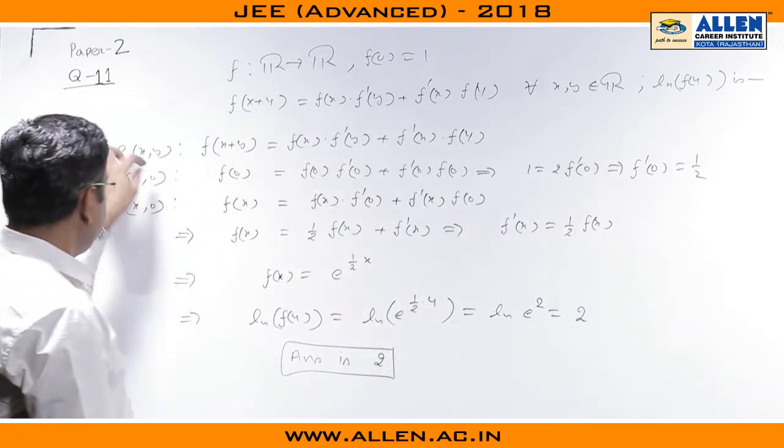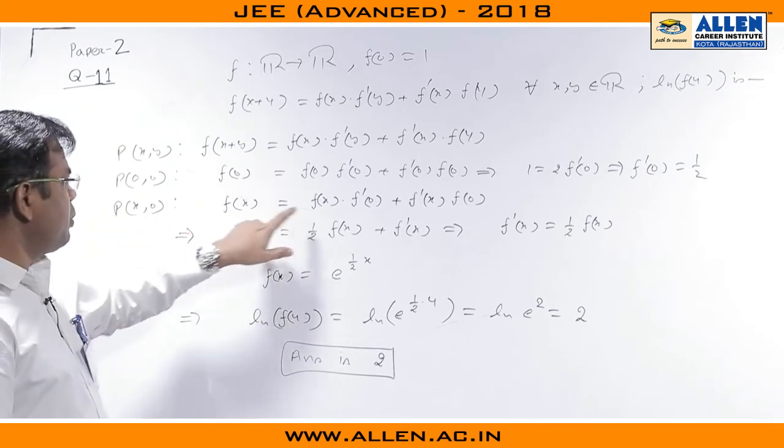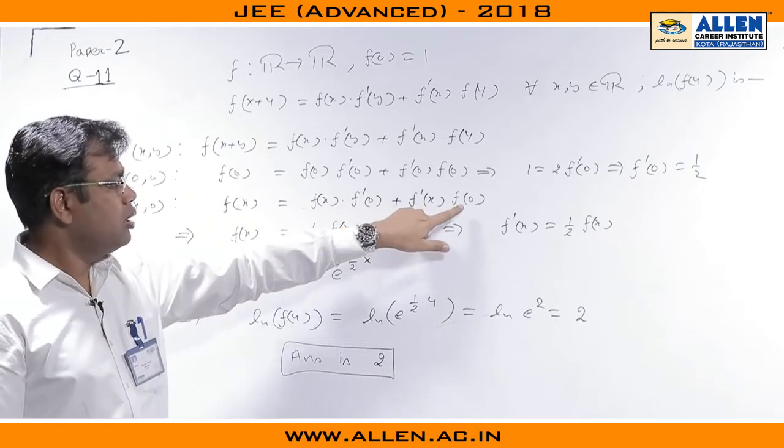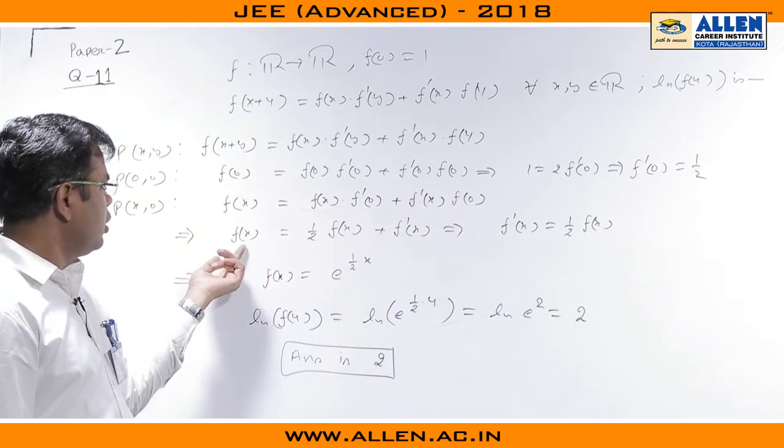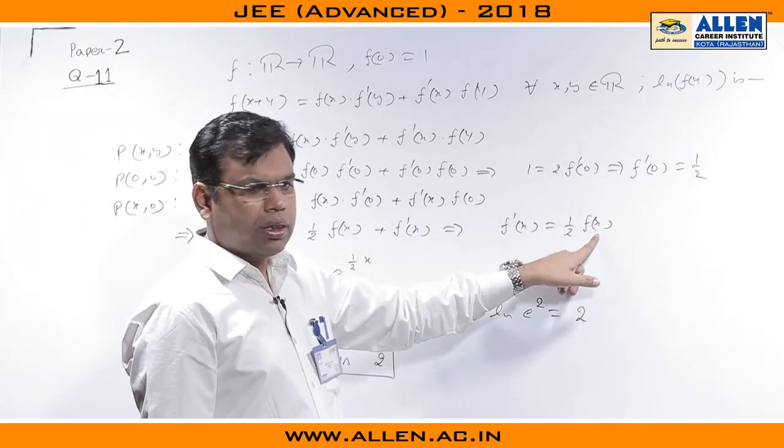After that, again use this proposition on x and y, replace y by 0. So it becomes f(x) = f(x)f'(0) + f'(x)f(0). Replace f(0) by 1 and f'(0) by 1/2. Simplifying gives f'(x) equal to 1/2 times f(x). This is a trivial kind of equation.